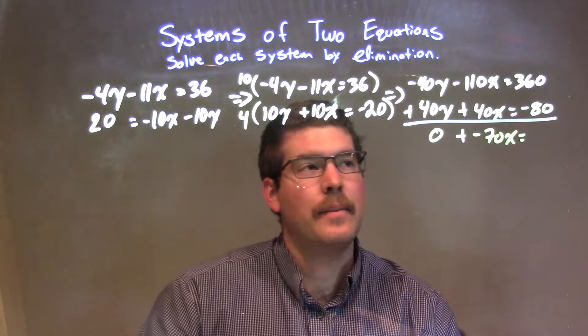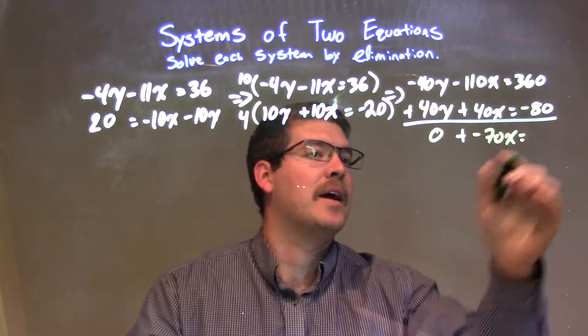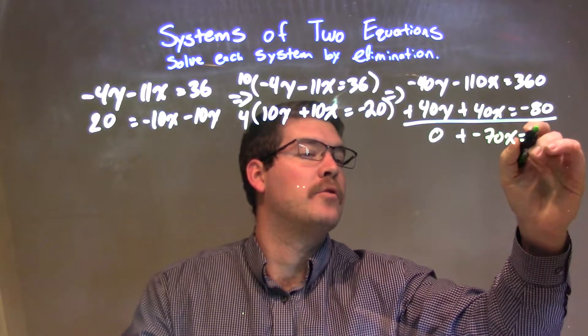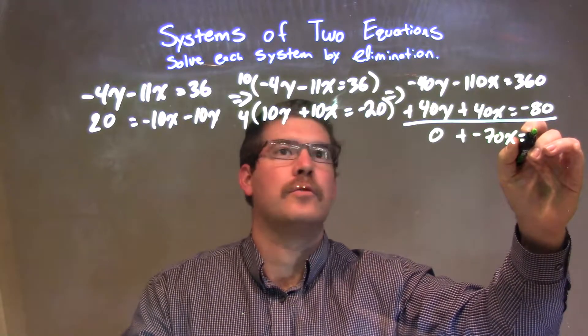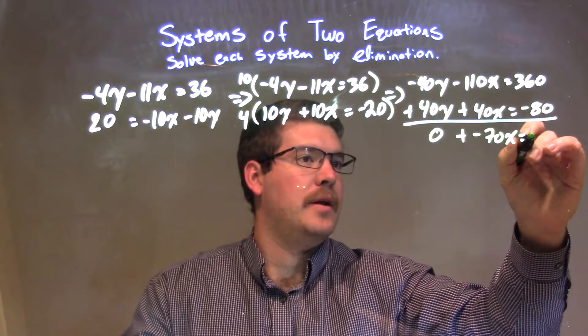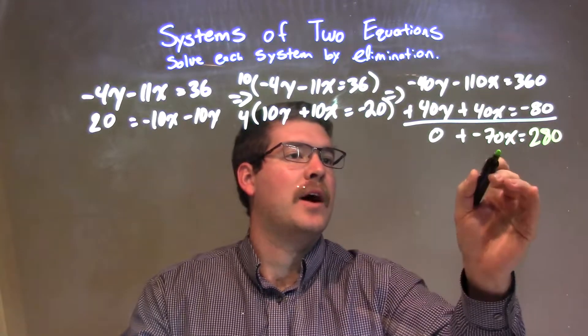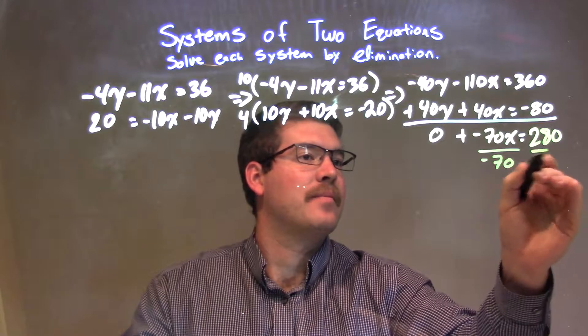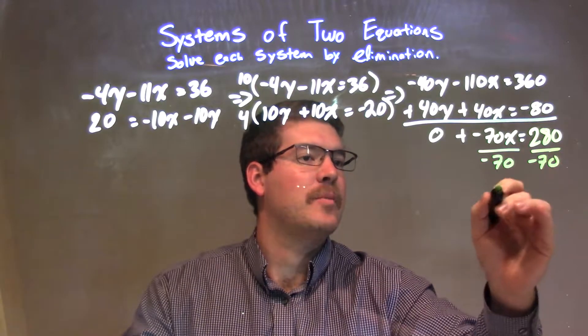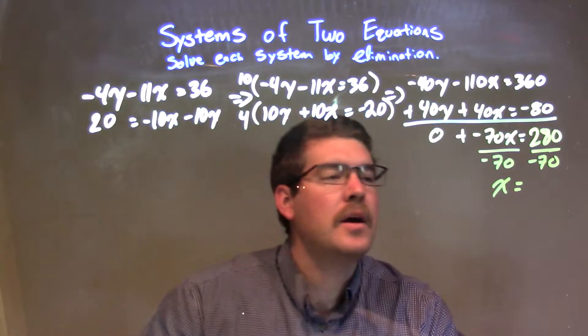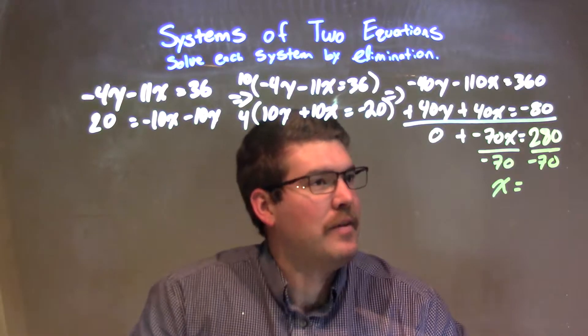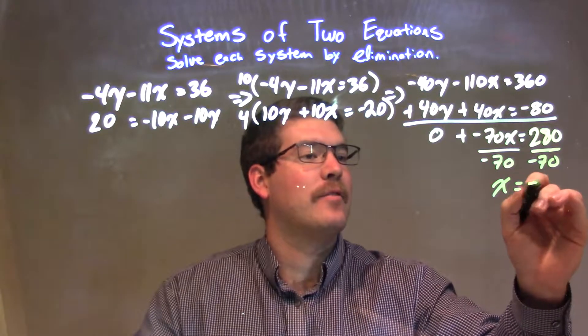Now we have 360 minus 80 is positive 280. So now I'm going to divide both sides by negative 70, and that should give me x by itself, and 280 divided by negative 70 is negative 4.